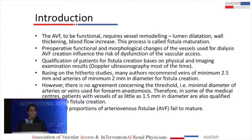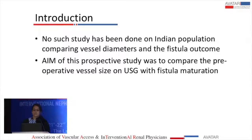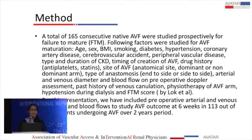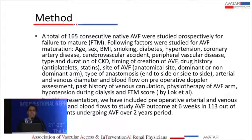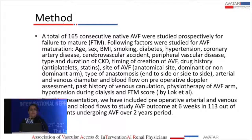Hence a substantial number of AV fistulas fail to mature. The aim of our study was to compare the preoperative vessel size on USG and its effect on AV fistula maturation. We had a total of 165 native AV fistulas constructed, with various demographic factors, comorbid conditions, type and duration of CKD studied. For this presentation, we included 113 AV fistulas examined preoperatively with ultrasound for arterial and venous diameters and blood flow, assessed for maturation at 6 weeks based on the rule of 6 from CKD guidelines.